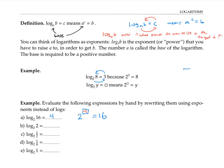Please pause the video and try some of these other examples. Log base two of two is asking what power do you raise two to, to get two? The answer is one, since two to the one equals two. Log base two of one half is asking two to what power gives you one half. To get one half, you need to raise two to a negative power — two to the negative one — so the answer is negative one.